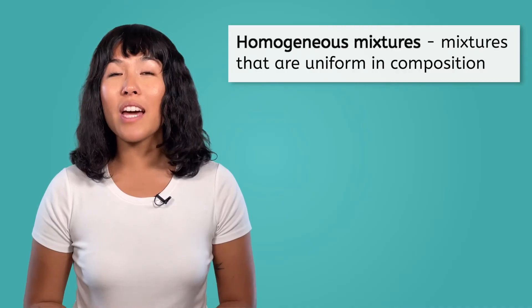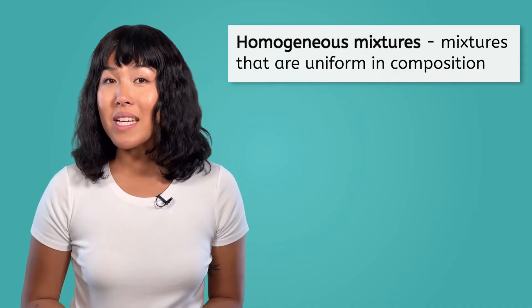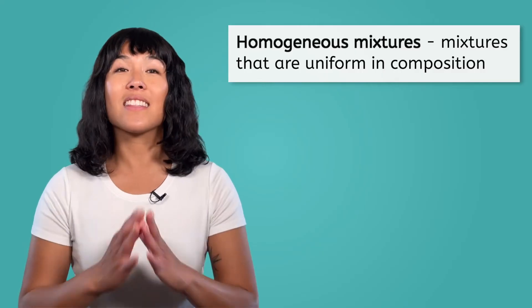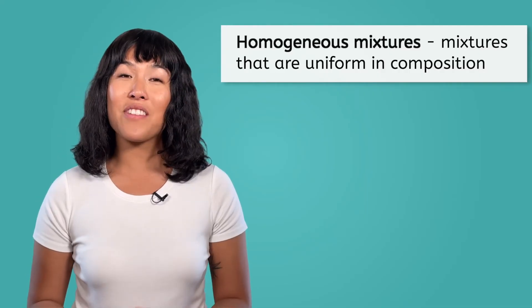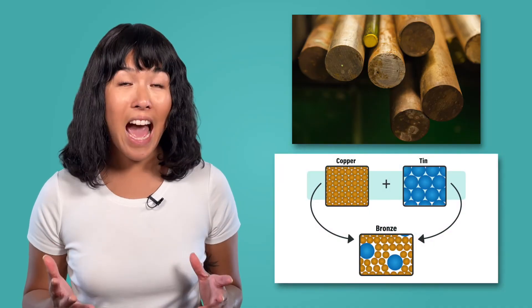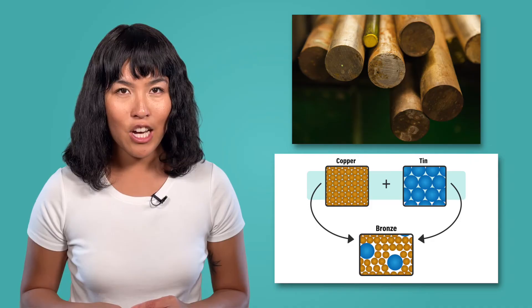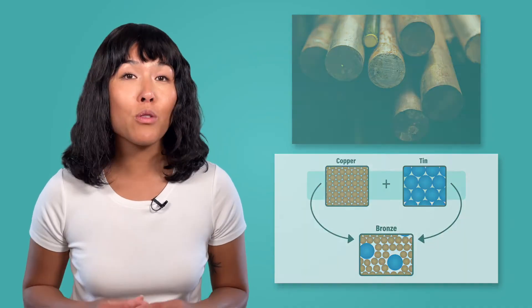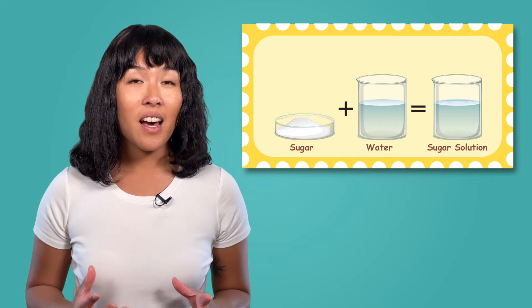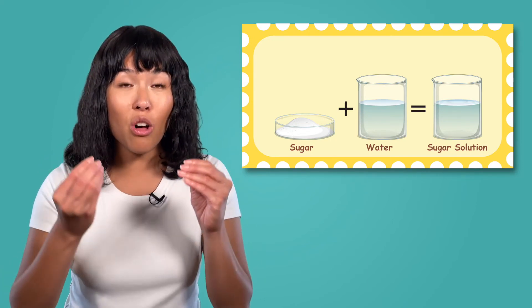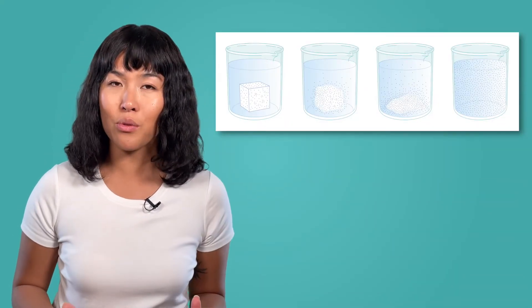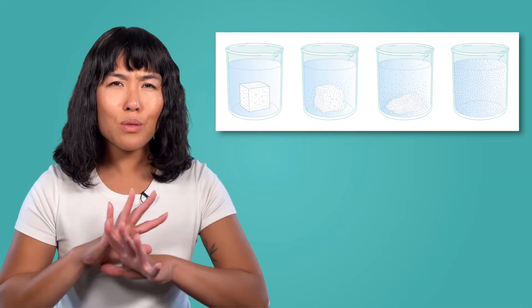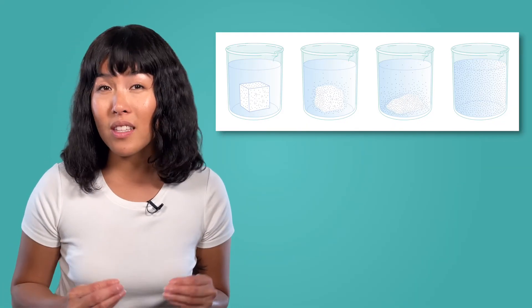Homogeneous mixtures are mixtures that are uniform in composition, which means that every sample of the mixture has the same substances in the same ratio. Alloys are mixtures of metals that have an increased strength and hardness. Bronze is a mixture of copper and tin atoms in a uniform composition. Sugar water is a specific type of homogeneous mixture called a solution. A solution is a mixture formed by dissolving a solid in water. Often it does not look like a mixture because the solid molecules — sugar molecules in this case — are so spread out from each other that they are invisible to the naked eye.